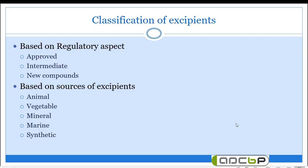Based on the regulatory aspect, there are three classes. First: approved excipients — these are excipients used in the food as well as pharmaceutical industry, considered as safe, and have been in use for a very long time, so their safety is known. Second: intermediate excipients — these are derivatives or structural modifications of the approved excipients, and they are also used as excipients.